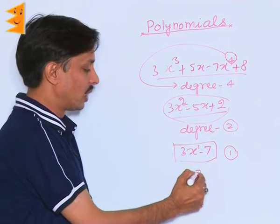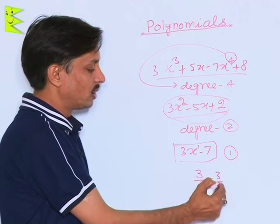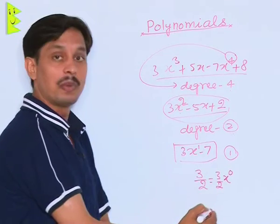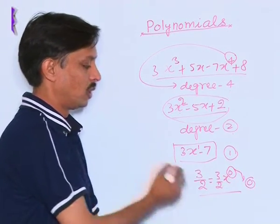If I write any constant number like 3/2, I can write 3/2 as 3/2 × x⁰. So 0 is the degree of this polynomial.